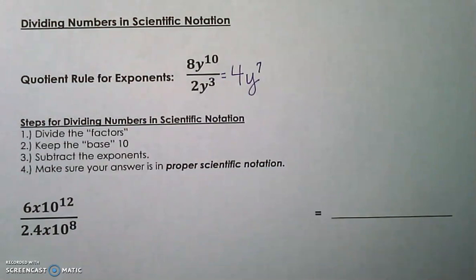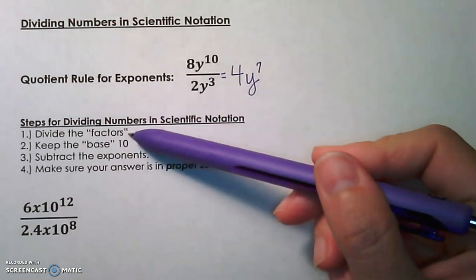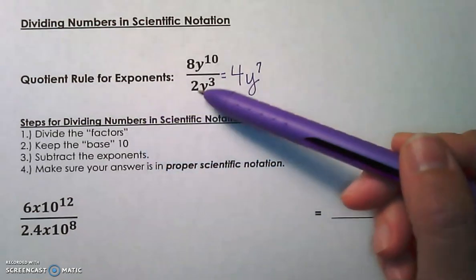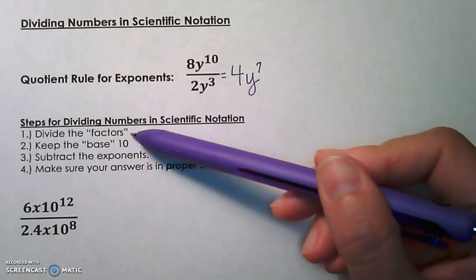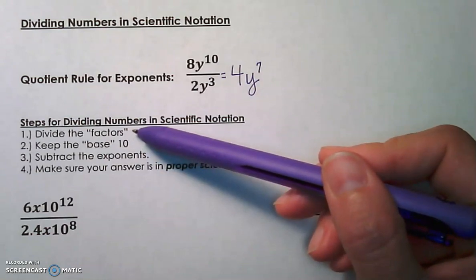We are going to take that same idea and apply it to dividing numbers in scientific notation. So the first step is to divide the factors. The factors would be just like the coefficients here. Factors in scientific notation are those numbers that are usually decimal values that are multiplied by the powers of 10.